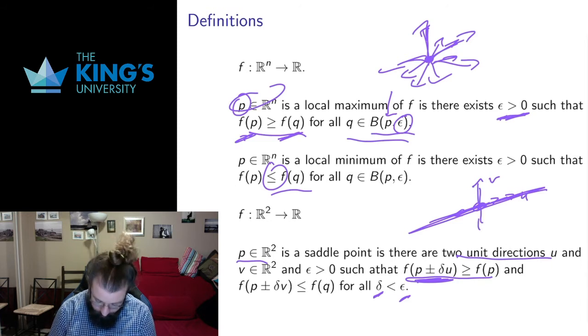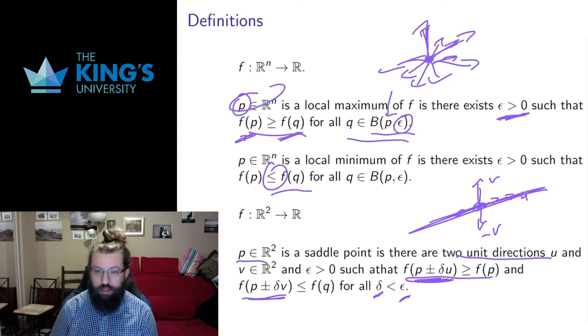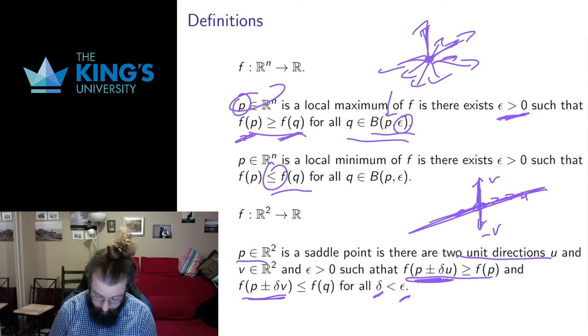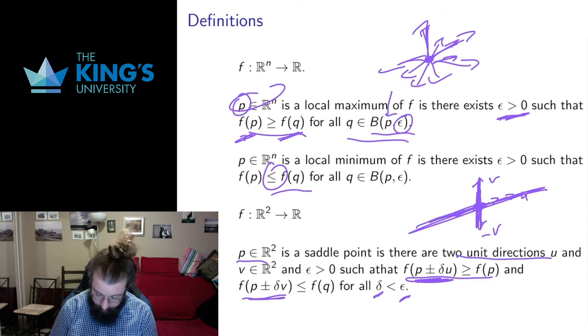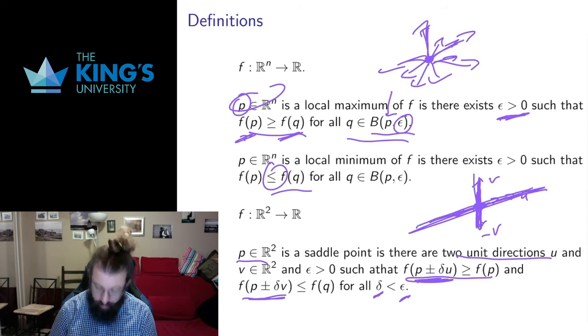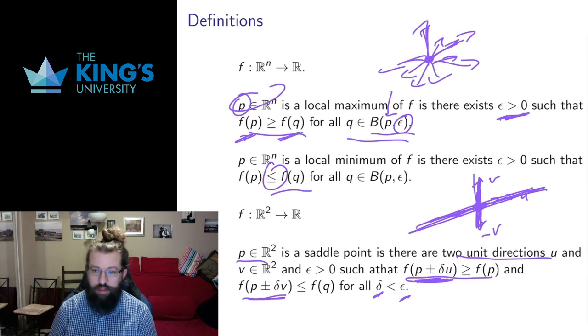But I have another direction, v and negative v. If I move a little bit in that direction, things are going down. So I have a second axis where things are going down. This gives me a saddle point. It's a minimum in one direction and a maximum in the other direction. Called a saddle point because it sort of looks like that saddle type shape.